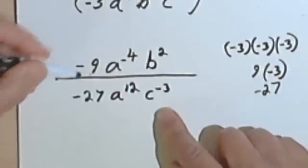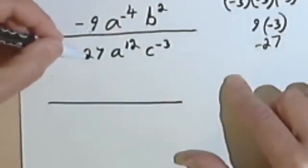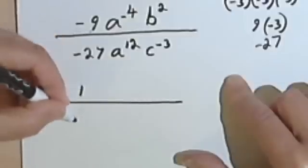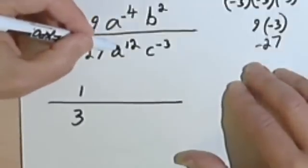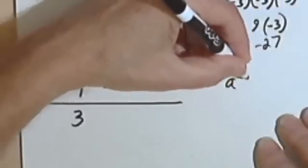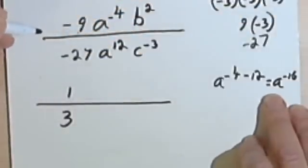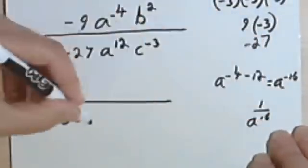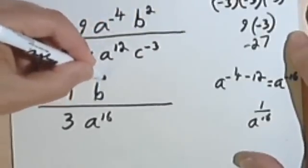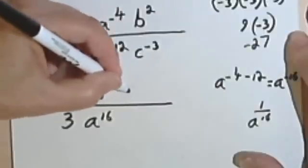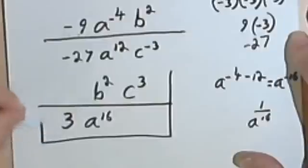Now I can simplify the whole fraction. I've got two negative signs — negative divided by negative is positive. Then 9 over 27: dividing both by 9 gives 1 over 3. a to the negative 4th over a to the 12th is a to the negative 4 minus 12, which is a to the negative 16, or 1 over a to the 16th in the denominator. b squared stays as is. c to the negative 3 moves to the numerator and becomes c to the positive 3. The 1 in the numerator is no longer necessary, so the final answer is b squared c cubed over 3a to the 16th.